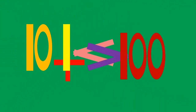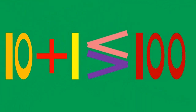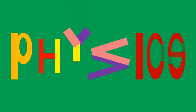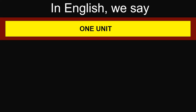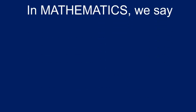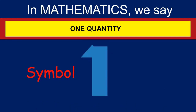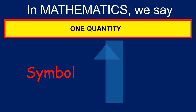Hi friends, let us learn physics as a combination of simple mathematics and simple English. In English, this whole thing is called as one unit. In mathematics, we represent the same thing using symbols like one quantity.